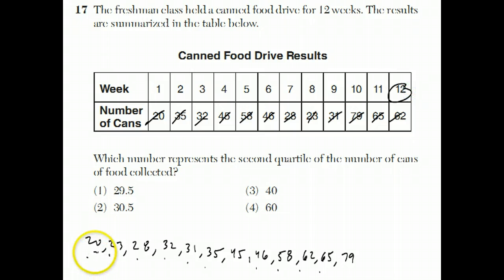So if you cut this list in half, 1, 2, 3, 4, 5, 6, the median is the second quartile. Well, there are two numbers in the middle now because there's an even number of numbers. So you take the average of those two. And 35 plus 45 is 80 divided by 2 is 40,